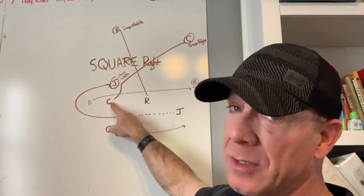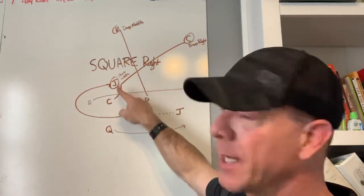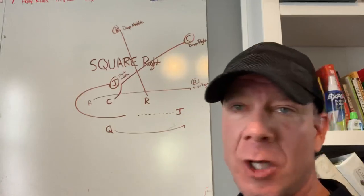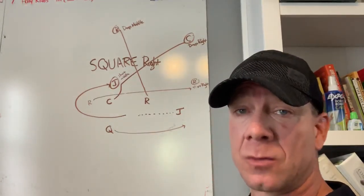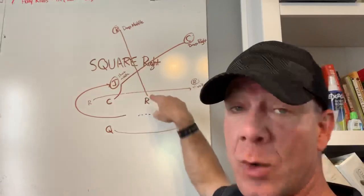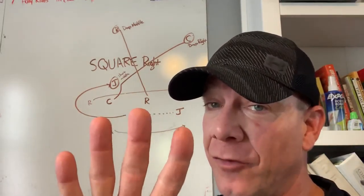Center's job, we've got to have a good snap. Hesitate a little bit. And then go deep right. That's going to be open all day long. So that is square right. The end goal is to have a square. Because they've got three guys covering four.